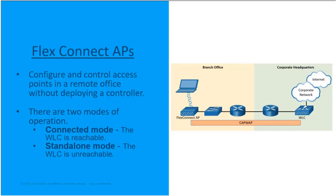In standalone mode, the wireless LAN controller is unreachable. The FlexConnect access point has lost or failed to establish the CAPWAP tunnel with the wireless LAN controller. In this mode, the FlexConnect access point can assume some of the wireless LAN controller functions, such as switching client data traffic locally in the network and performing client authentication.